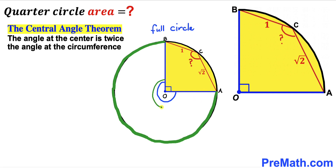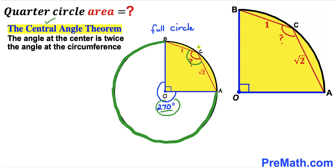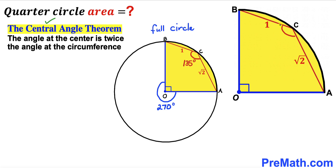Since the full circle is 360 degrees, the remaining angle at the center is 270 degrees. Therefore, by the central angle theorem, the angle at the circumference is half of that — so angle ACB equals 135 degrees.